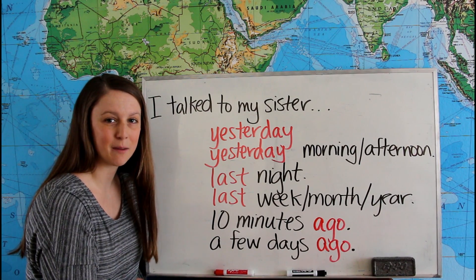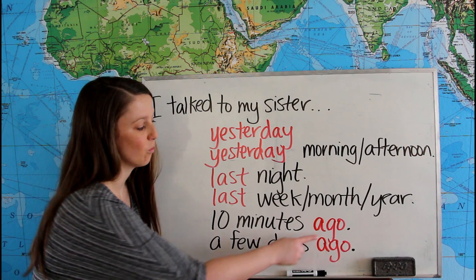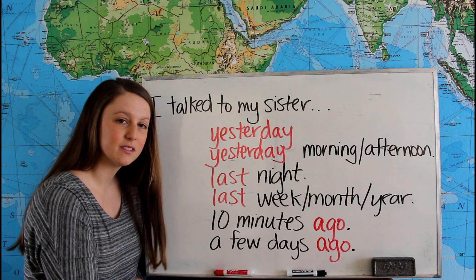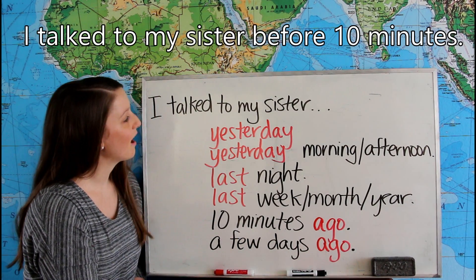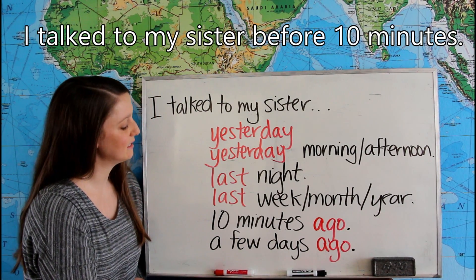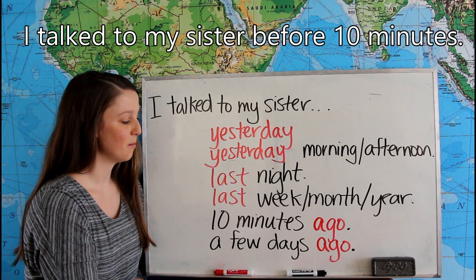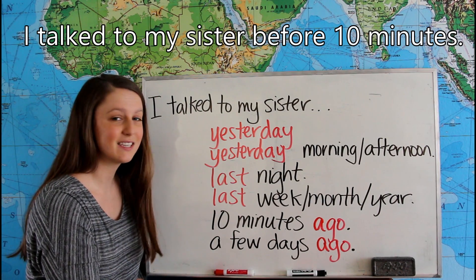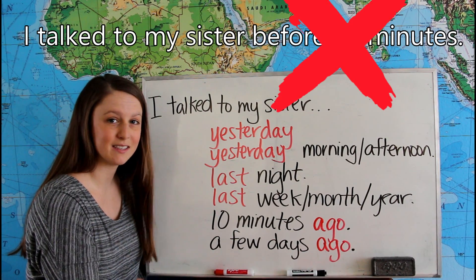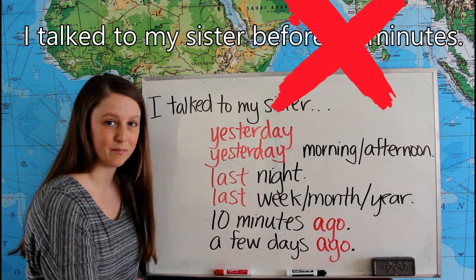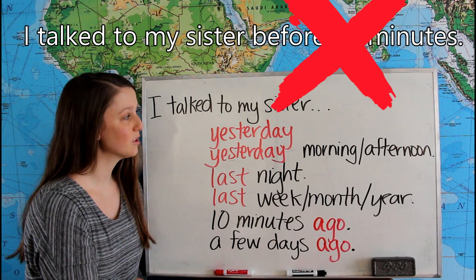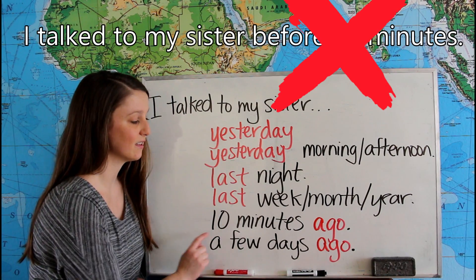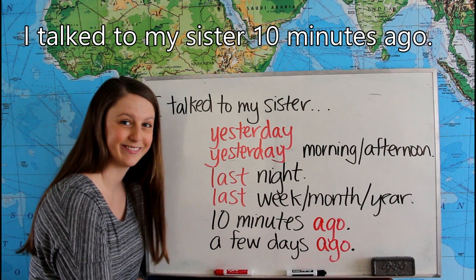Many students make a mistake with 'ago.' They will say 'I talked to my sister before ten minutes.' This is not correct English grammar. You should say 'I talked to my sister ten minutes ago.'